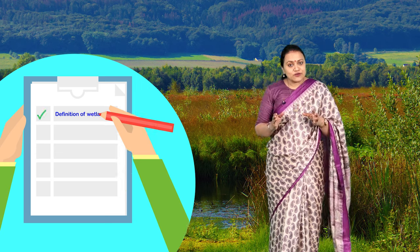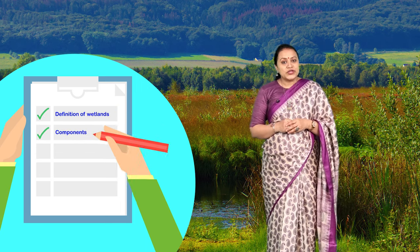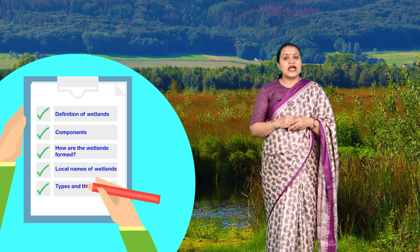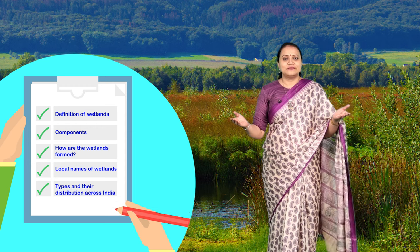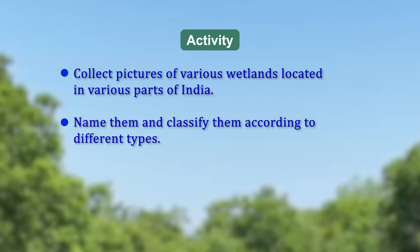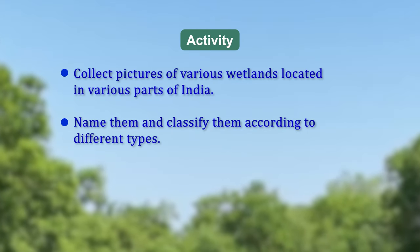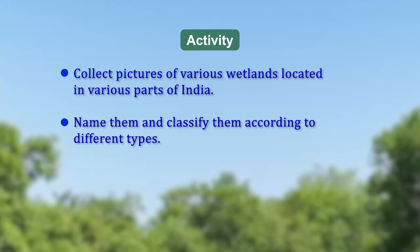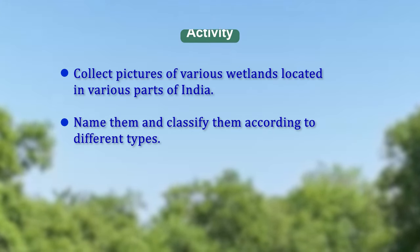This was a brief about wetlands. In this session, we got to know about the definition of wetlands, their components, how they are formed, their local names, types, and their distribution across India. Let us do an activity: collect pictures of various wetlands located in various parts of India, name them and classify them according to different types. We will come up with some other topic related to wetlands in the next session. Till then, bye and take care.